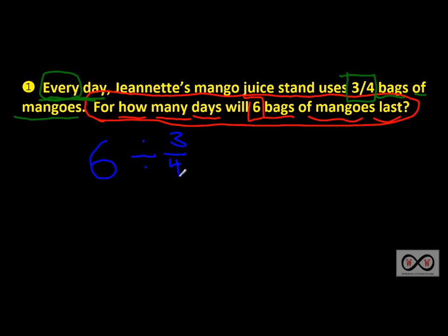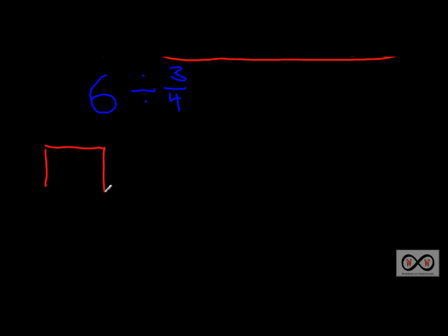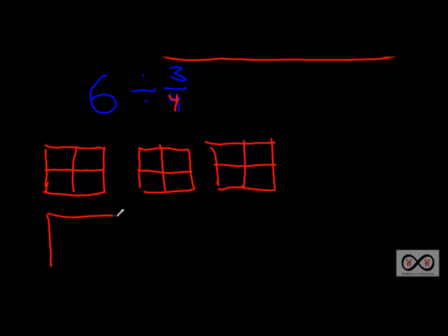Sometimes it's easier to visualize these things. We have six bags of mangoes, and we're going to use our rectangular area models — sometimes called rectangular arrays. Our denominator is four, so it tells us to divide each bag into four equal parts. We need six of these. We're trying to figure out how long six bags of mangoes will last if she uses three-fourths of a bag each day.